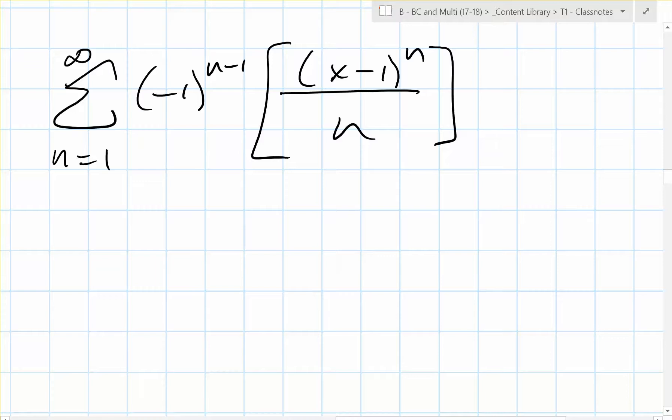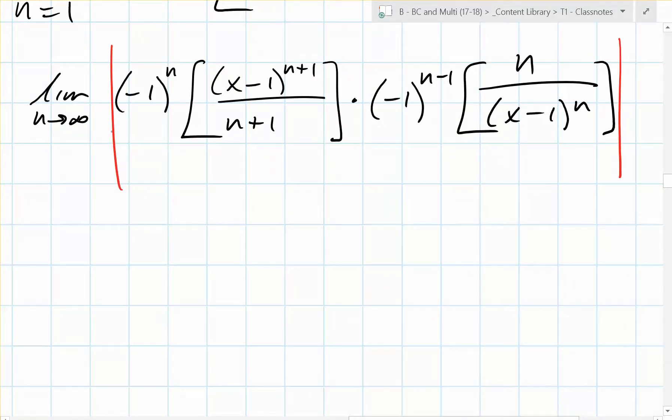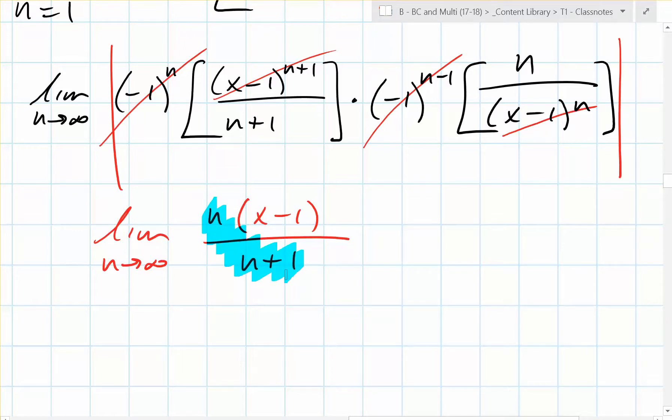Does this converge? Let's go to the absolute value. It allows us to get rid of these because it stays positive. We have some stuff that can cancel, right? Leaving you with just x minus 1 on top. So what do you end up with? N times x minus 1 all over n plus 1. As n goes to infinity, n over n plus 1 turns into 1. So this limit equals x minus 1.